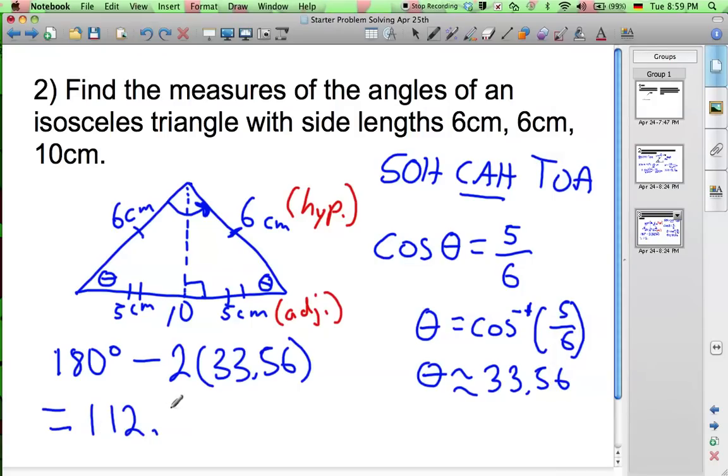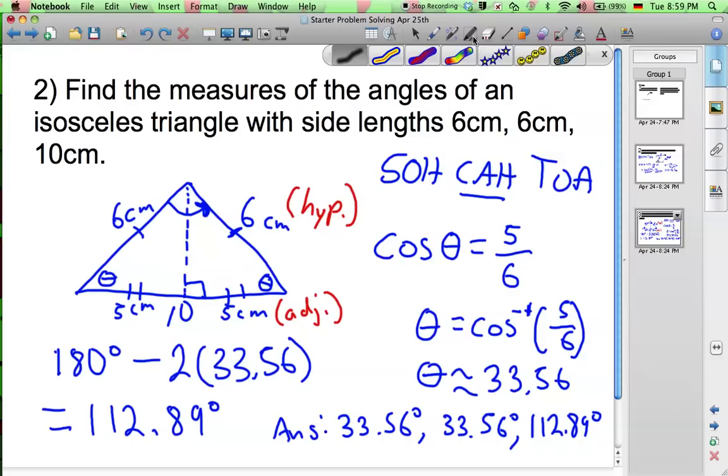112.89 degrees. So, the answer, three angles of the isosceles triangle are 33.56 degrees, 33.56 degrees and 112.89 degrees. So that's your answer right there.